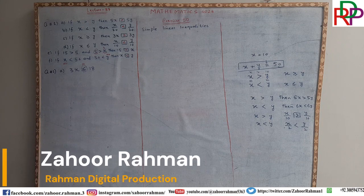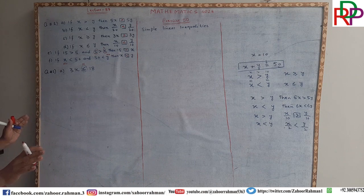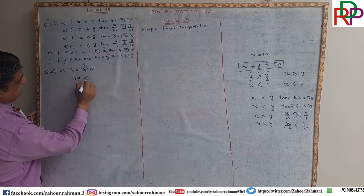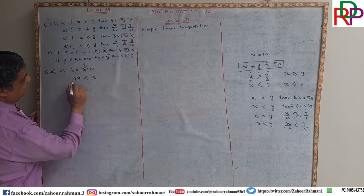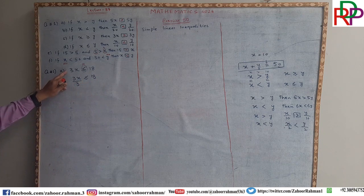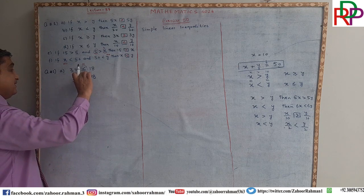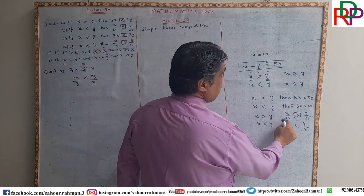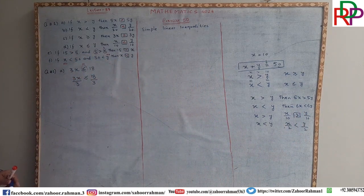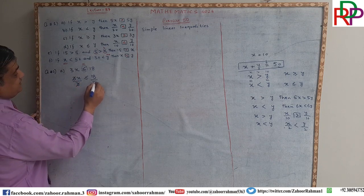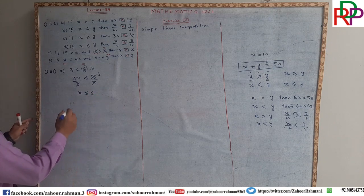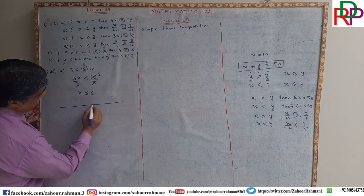So we are solving it by dividing both sides of the inequality by 3. We are dividing by a positive number, so the sign will not change. If it were a negative number the sign would change, but here it is positive, so the inequality sign remains intact. The 3 cancels, giving x is less than or equal to 6. Now we illustrate on a number line: mark 3, 4, 5, 6 on the right and -1, -2, -3, -4 on the left.